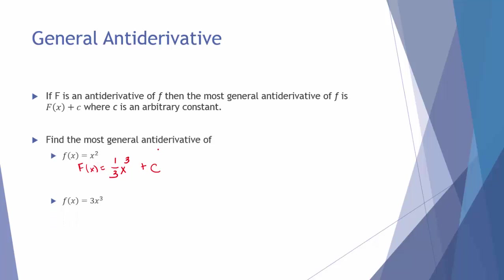For another example, if f(x) = 3x³ and we want the antiderivative, we know it must have x⁴, because the only way to get a derivative containing x³ is to start with x⁴. But the derivative of x⁴ is 4x³, not 3x³. So we need to figure out what to multiply by to replace the 4 with a 3. That gives us 3/4 x⁴ plus the arbitrary constant. Double-check: when you drop the 4, the 4s cancel, leaving 3x³, which is what we wanted.